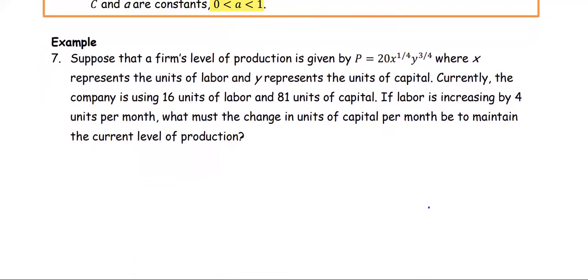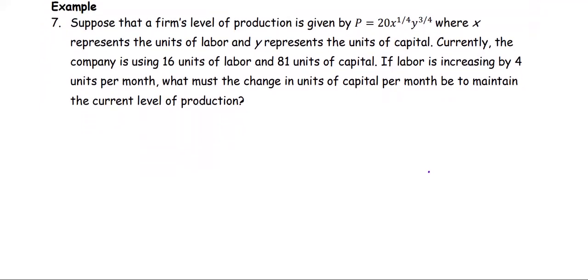For example, suppose that a firm's level of production is given by p equals 20 times x to the power one-fourth times y to the power three-fourths, where x represents the unit of labor and y represents the unit of capital. Currently, the company is using 16 units of labor, 81 units of capital, and labor is increasing by four units per month. What must the change in units of capital per month be to maintain the current level of production?